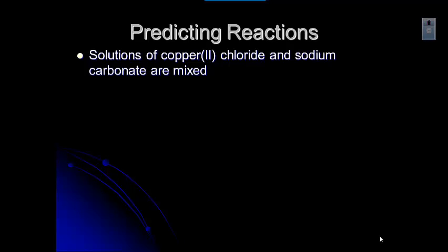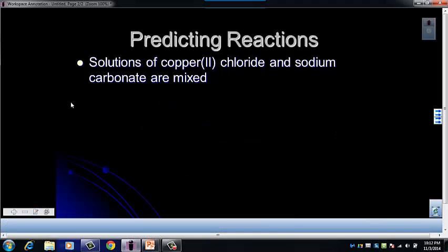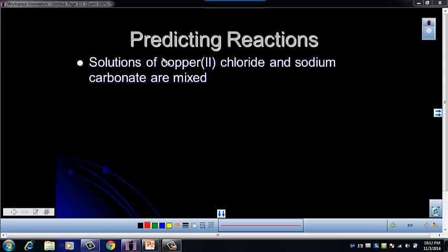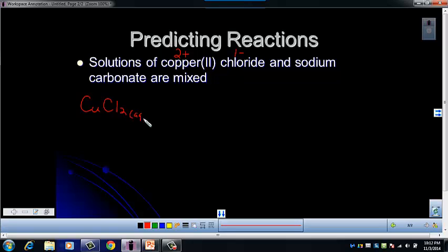It tells you that solutions of copper 2 chloride and sodium carbonate are mixed. The first thing we want to do is write out the reactants. Copper 2 chloride — the Roman numeral 2 is the 2+ charge on copper, and chloride is a 1 minus — so copper 2 chloride is CuCl2. We know it's a solution, so we put the AQ symbol. Leave a little space before each compound since we'll need to balance this.